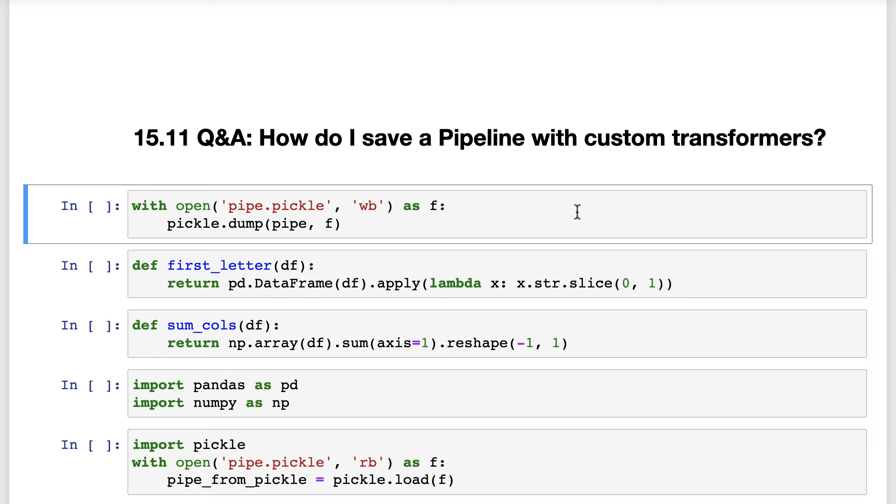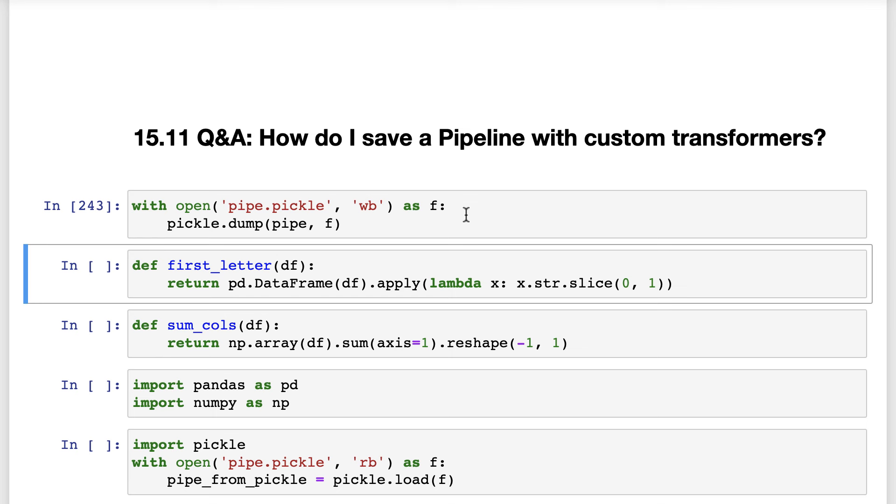For example, let's save our current pipeline using Pickle. Let's pretend that we're in a brand new environment, and we wanted to make predictions for X_new using our saved pipeline.